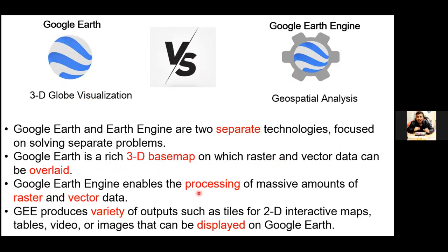While Google Earth Engine enables the processing of massive amounts of raster and vector data. In Google Earth, you cannot perform any raster-based calculation or analysis — it is generally for visualization only. But Google Earth Engine enables the user to process massive amounts of raster, vector, or any other geospatial format. Lastly, Google Earth Engine produces a variety of outputs such as tiles for 2D interactive maps, tables, video, and images that can be displayed on Google Earth. Most of these outputs can be overlaid in Google Earth for viewing purposes.